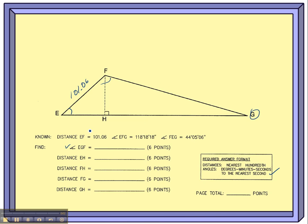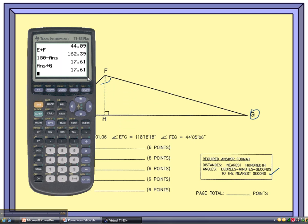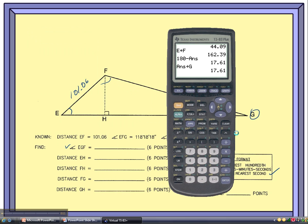Picking up where we left off, we had just found angle G in the calculator. There it is at 17.61 degrees. I have to write that in the blank, but I need to convert that into degrees, minutes, and seconds. So that's on that alpha menu.